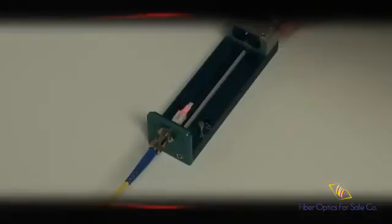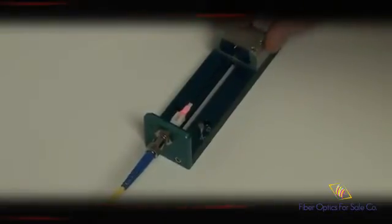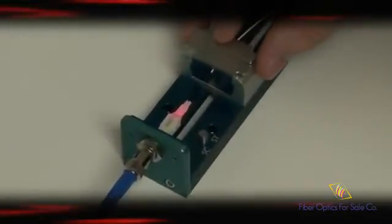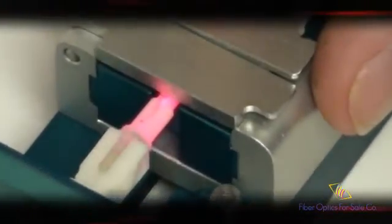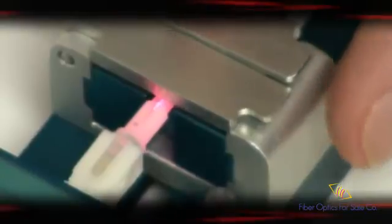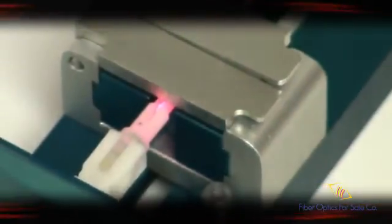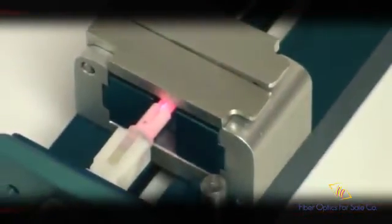Next, slowly slide the clamp end toward the back of the bobtail connector. The fiber should slide into the back of the connector without much force, as to not break the fiber stub. If the fiber is not lined up properly, back off the clamp end, readjust the fiber in the V-groove, and continue inserting the fiber into the connector.